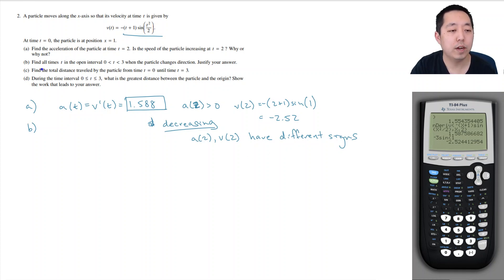Part B: Find all times in the open interval when the particle changes direction and justify your answer. Changing direction is when the velocity hits 0, because it goes from positive velocity to negative velocity or negative velocity to positive velocity. So I want to know every time it changes to 0. The way I do that is I look at when the derivative is equal to 0. So I want to know when a of t is equal to 0. I want to know when the derivative of this is equal to 0.